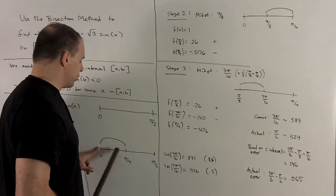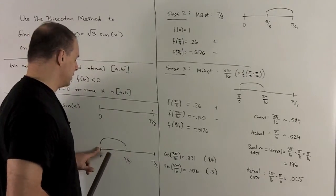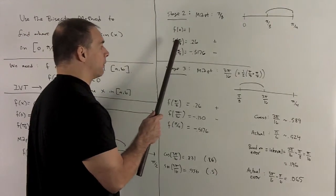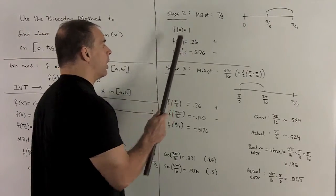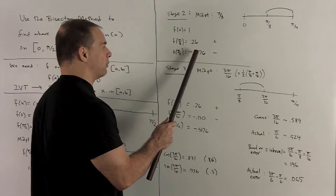So we have our intervals now 0 to π/4. Its midpoint, add them and divide by 2. So that's going to give me π/8. Now I just evaluate the function at π/8. For f(0), we had 1. f(π/4), we just saw is -0.5176.